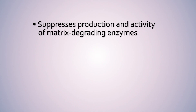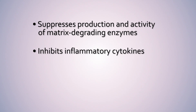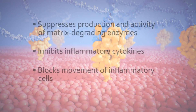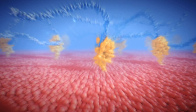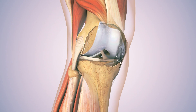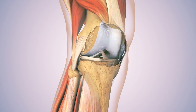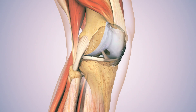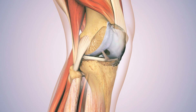HA suppresses production and activity of matrix-degrading enzymes that cause tissue damage, inhibits inflammatory cytokines that cause swelling and pain, and blocks movement of inflammatory cells that perpetuate the immune response. The unique combination of biomechanical and biochemical properties makes HA an important molecule for maintaining joint health.